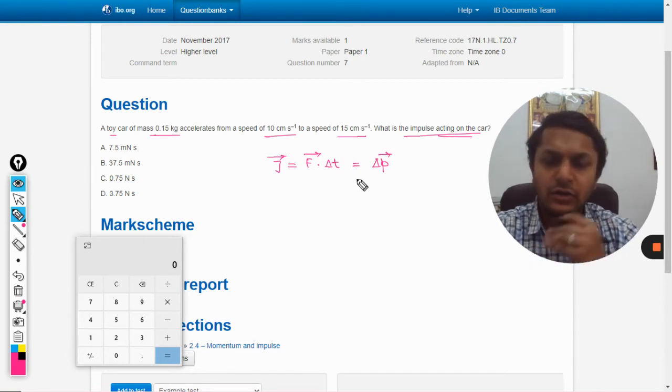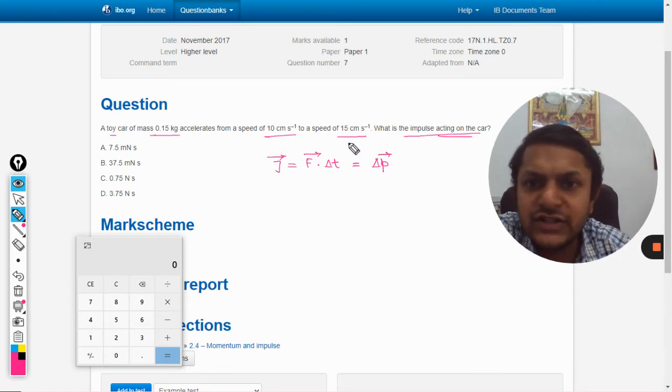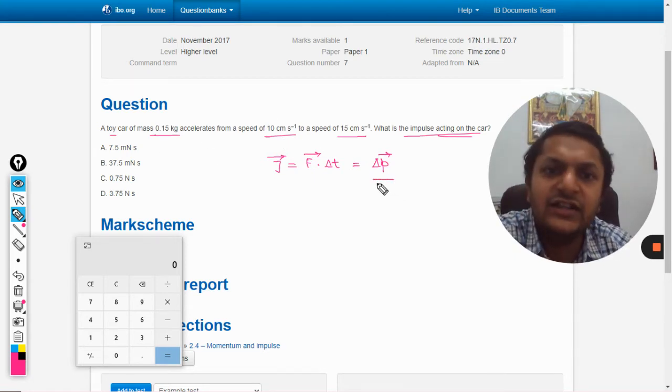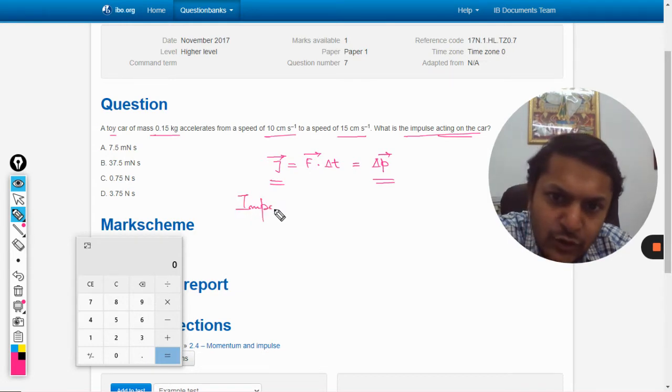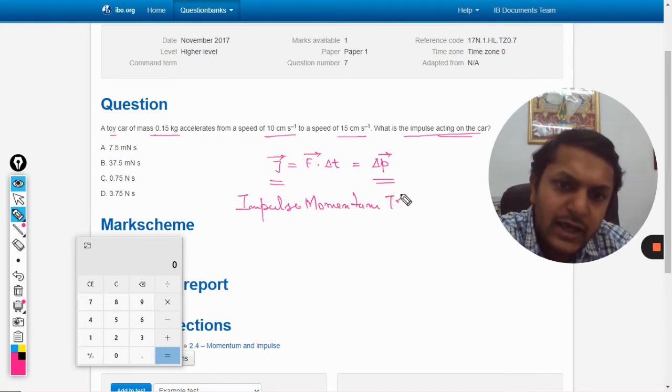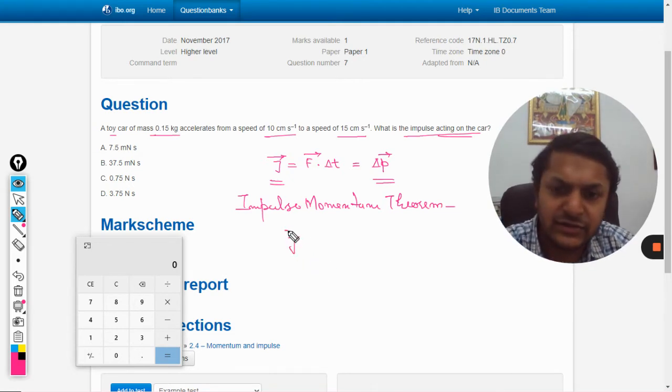Now the question is what is impulse that is acting on the body, on the car. What is given? The velocities are given, the mass is given. Definitely they are talking about the momentum, so this very thing is known as impulse momentum theorem. Impulse, noted by J, is equal to the change in momentum.